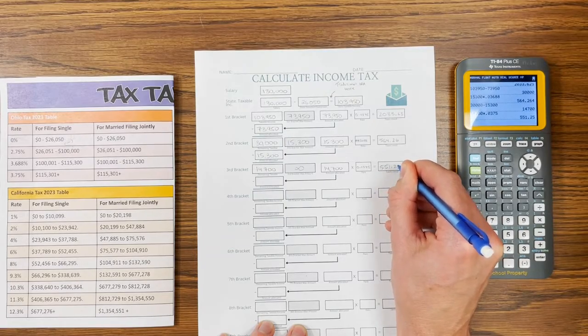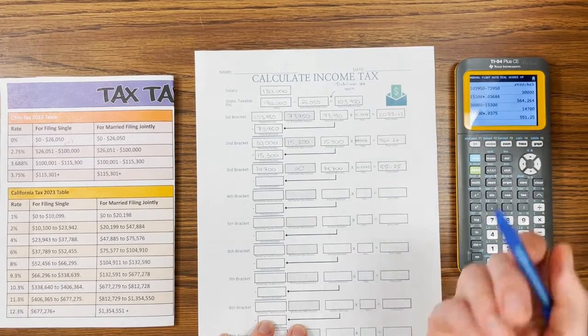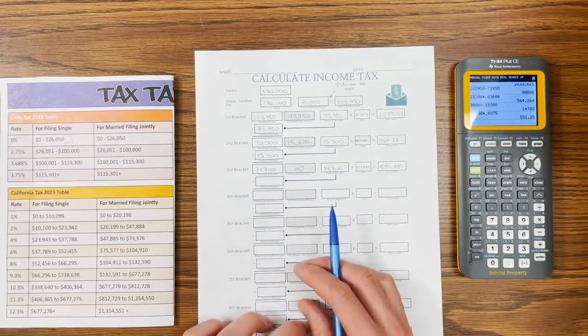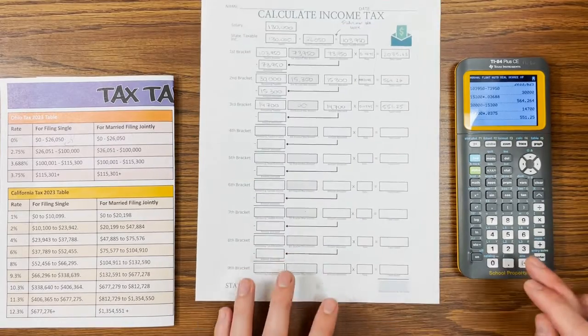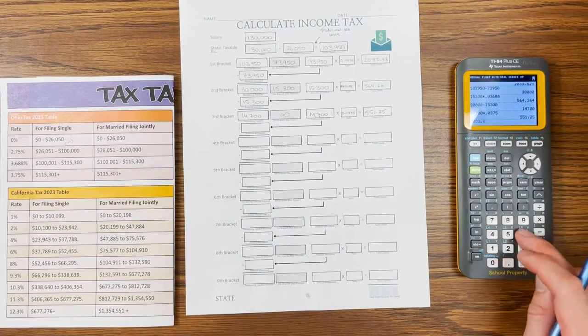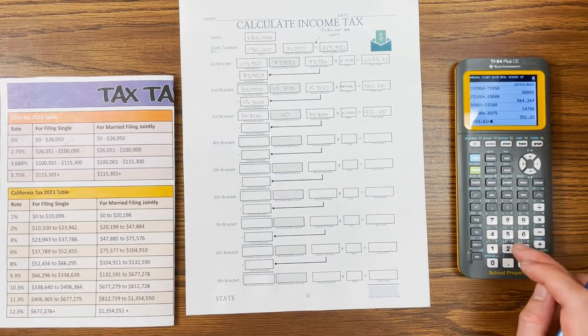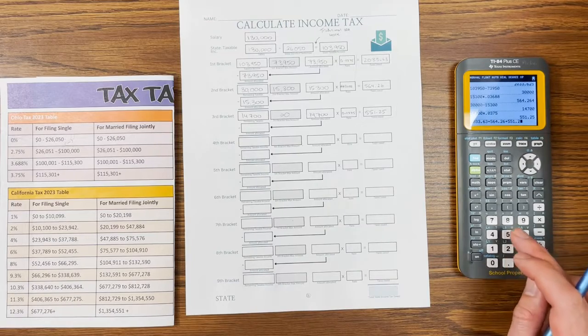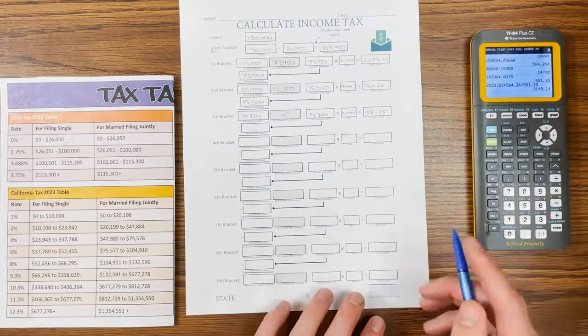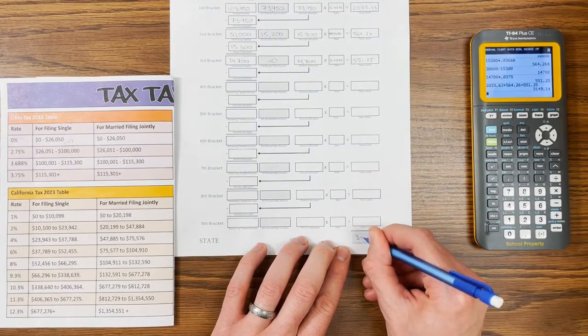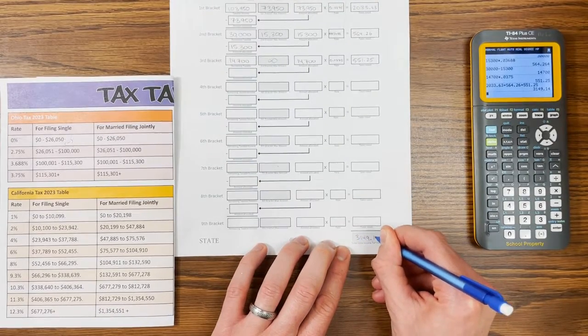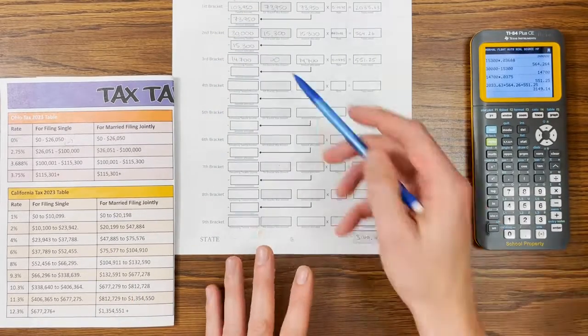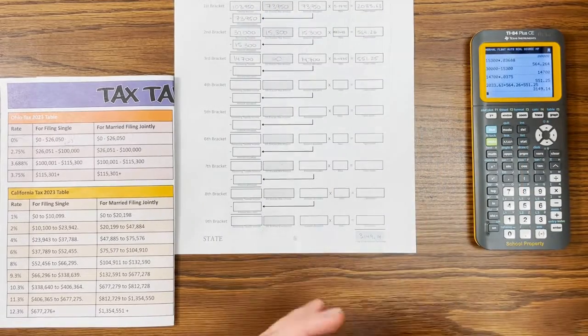That's it. We've finished. There's nothing left to tax. So we get to add up our total taxes owed. And that is going to be our final number. So I have 2,033.63 plus 564.26 plus 551.25, which equals $3,149.14. And that would be our total amount of state income tax owed for Ohio on a salary of $130,000.